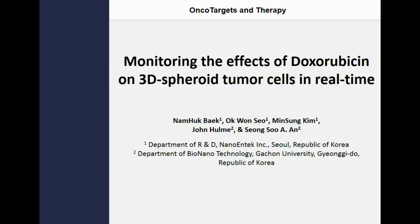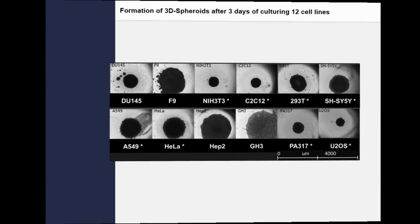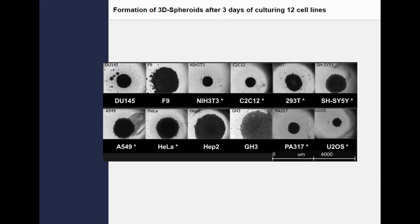We record the real-time movies of entire experiments. The majority of anti-cancer studies utilize 2D cell culture models. Since cancer cells exist in a 3D shape and interact with the surrounding intercellular spaces, we decided to make the cells into 3D spheroids and observe the effect of doxorubicin in a 3D setting.